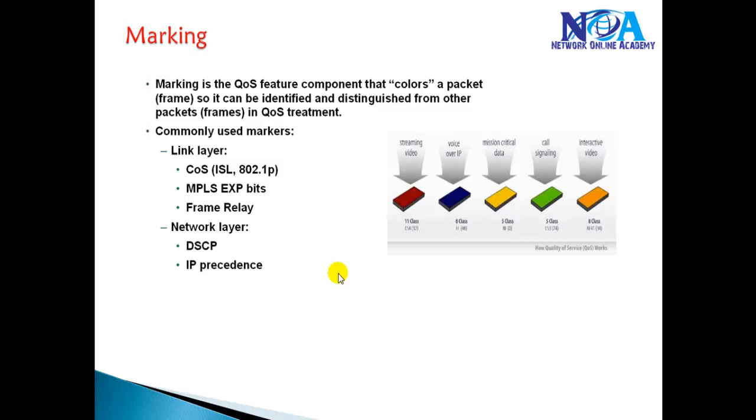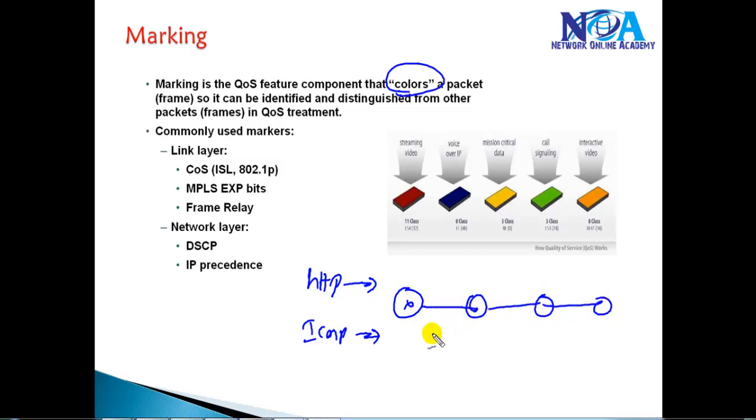Now the next thing is marking. Marking is a method like once we define different classes, like we have matched HTTP traffic and ICMP traffic, now we need to do some marking to that. Marking is something like coloring to the packets where we are doing some marking as it goes over the network so that it can be identified on the remote devices.